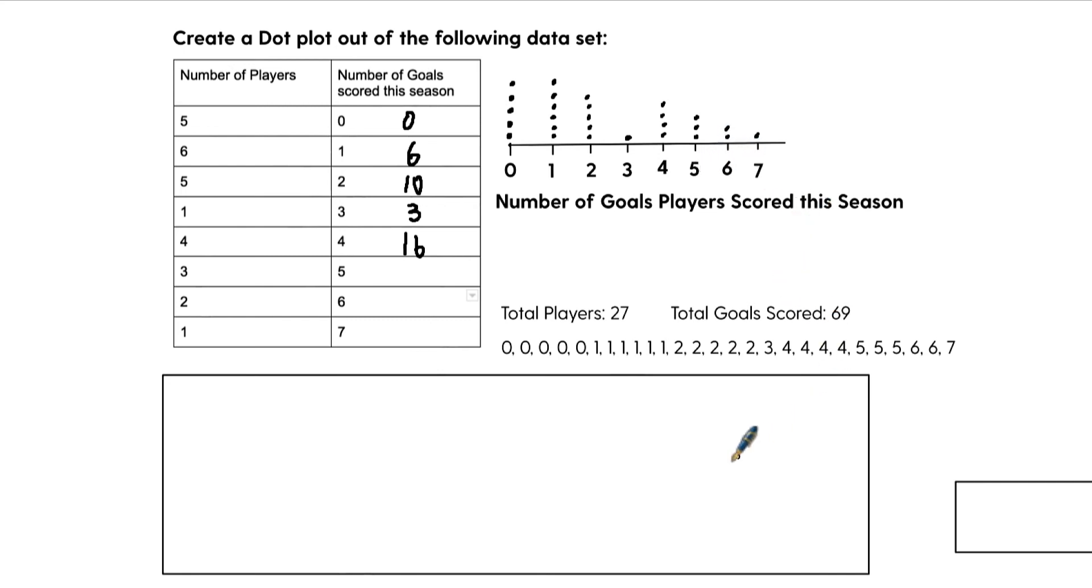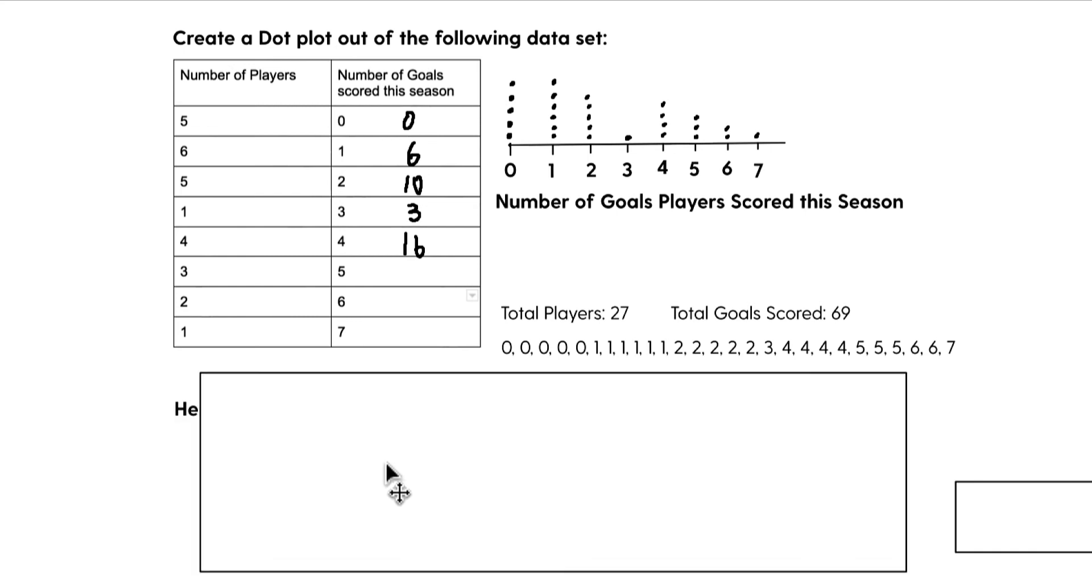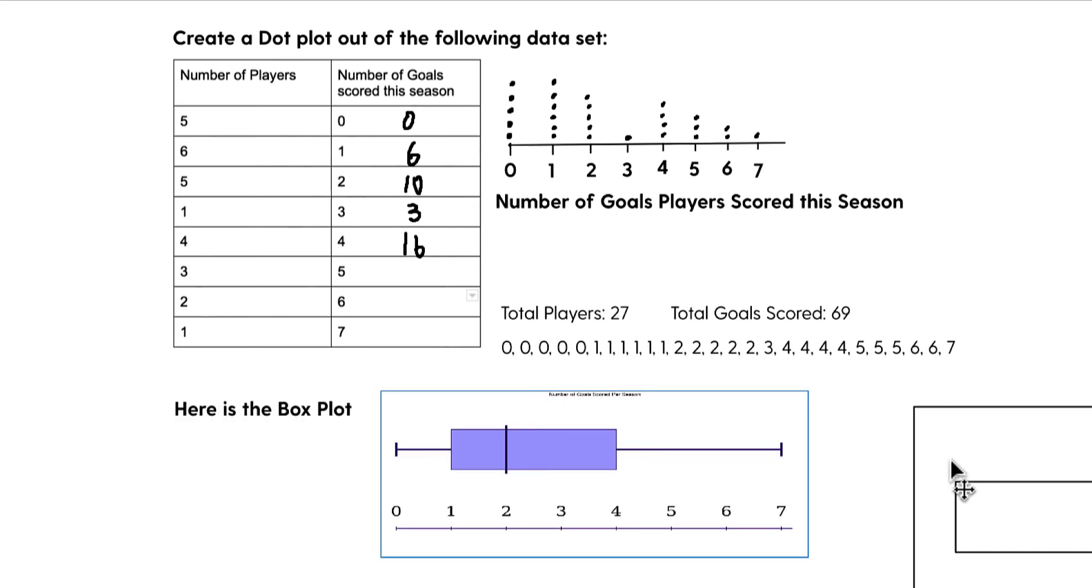So there's a lot of information that can come from these dot plots. That's why you're likely to see them on the GED. So there's something else I want to reveal, which is the box plot of this. And so here's the data set. In these box plots, what they represent is this right here represents the lowest value. The zero right here represents the lowest. That's because we had five players who scored zero points, zero goals.